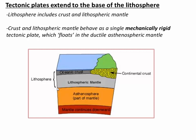We have a whole previous video about the basics of Earth structure, which I urge you to watch, but here's a quick recap. When we say plate we mean a rigid body of rock called the lithosphere that includes both the crust and the lithospheric mantle — that's the upper part of the mantle. And together those things behave as a single mechanically rigid tectonic plate, which is essentially floating in the ductile asthenospheric mantle. So the crust and the lithospheric mantle combine to make the lithosphere, which is floating in the mantle.